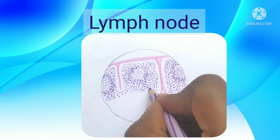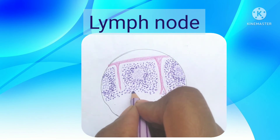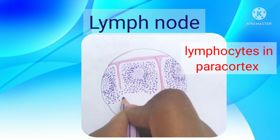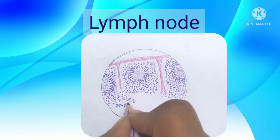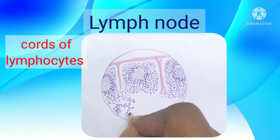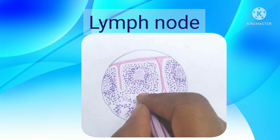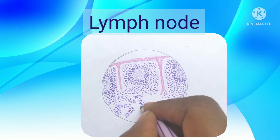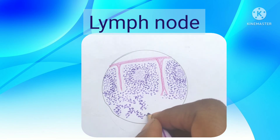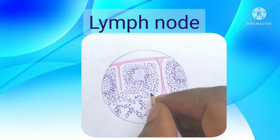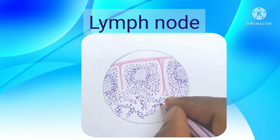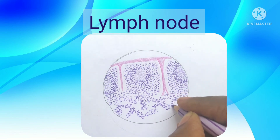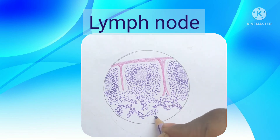Deep to the lymphatic nodules, you have a uniform distribution of lymphocytes - that's called the deep cortex or paracortex. There is no lymphatic nodule in the deep cortex. It is a thymus-dependent area because it contains mainly T-cells. The lymphatic nodules mainly contain B-lymphocytes, plasmablasts. Coming to the medulla, we have cords of lymphocytes mainly consisting of B-lymphocytes, and in between we have sinuses - medullary sinuses - which unite to form the efferent lymphatic vessels.